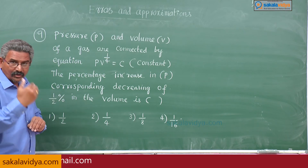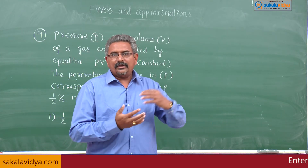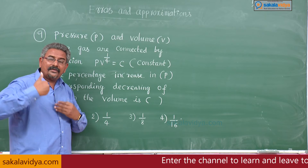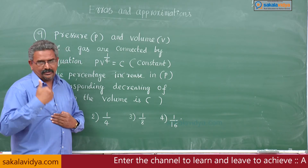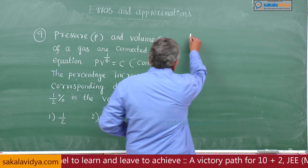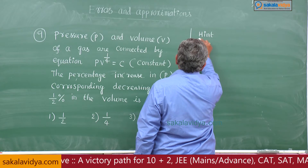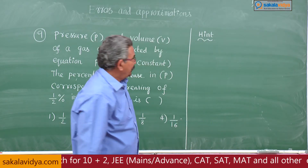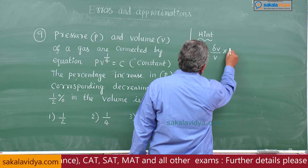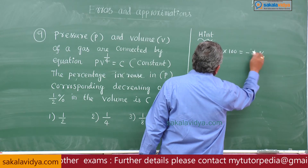You are asked to find out delta p by p into 100. We know that as volume decreases, pressure increases, so we need to calculate the percentage increase in pressure. What is given: delta v by v into 100 is minus half percent — minus because it is decreasing or diminution.